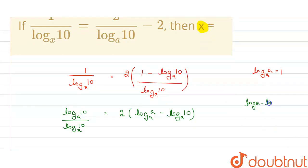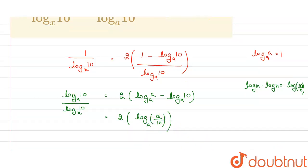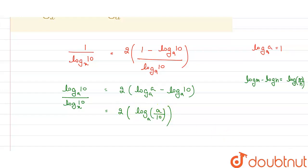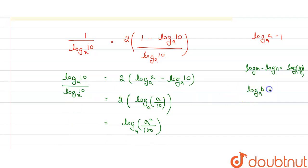As we know the property of logarithms: log m minus log n, with a common base, can be written as log(m/n). So this becomes 2 into log(a/10) base a. Now taking 2 as a power, we have log(a² upon 100) base a.